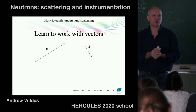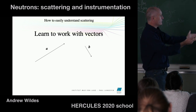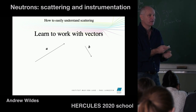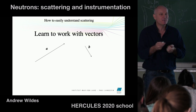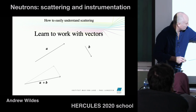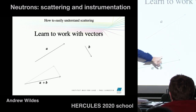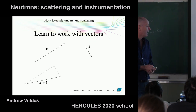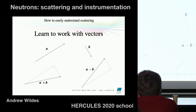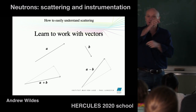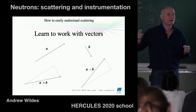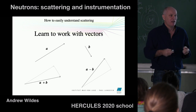The second important thing — particularly with neutron scattering — is to learn to work with vectors. A vector is a mathematical object that has magnitude and direction. You don't need complicated vector calculus, but if you learn how to manipulate vectors — for example, adding them head to tail, or subtracting by reversing direction — this becomes extremely important in neutron scattering. You're able to work out where you're looking in reciprocal space and what it physically means.